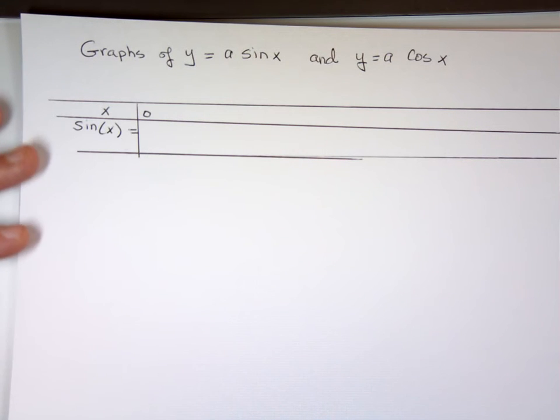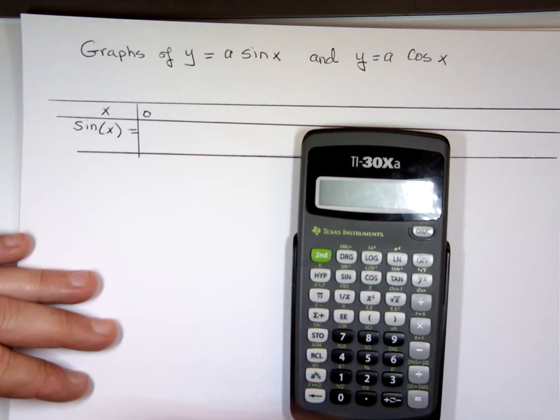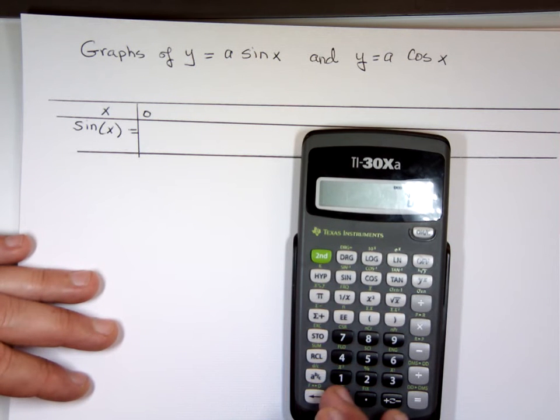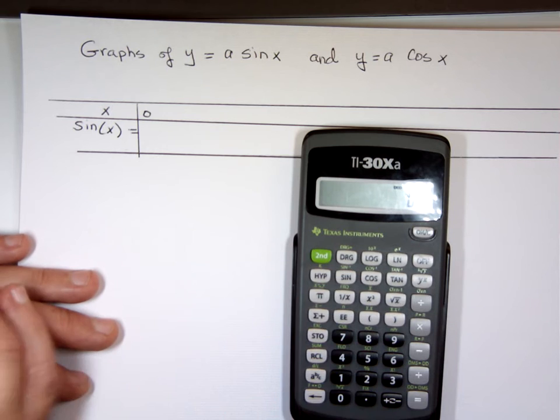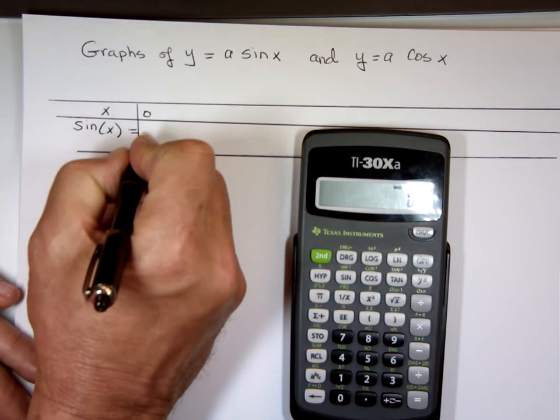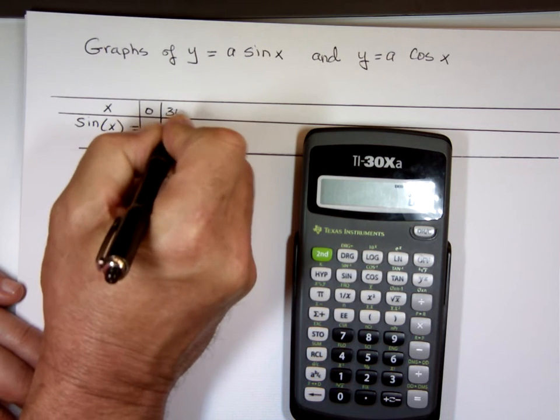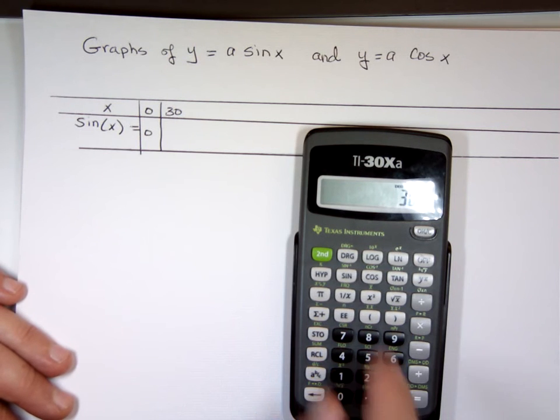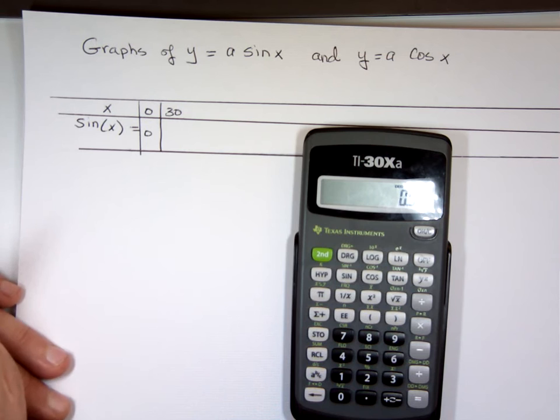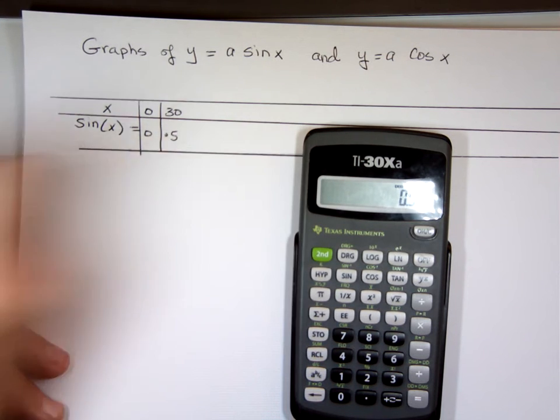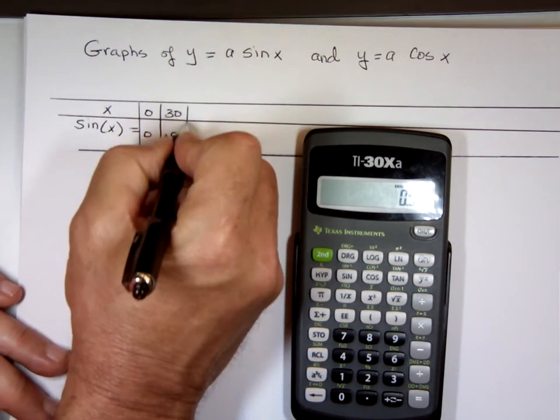Now, when x is 0 degrees, what's sine of 0? You take your calculator out. Make sure you are in degree mode. You go 0 and I want to take the sine of that. You get 0. For 30 degrees, I go 30, take the sine of it, 0.5.